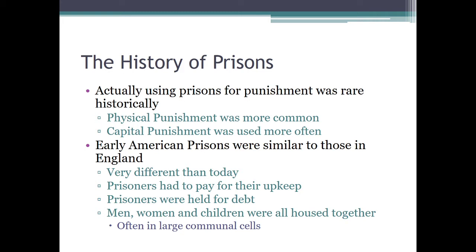Past societies tended to focus on physical punishment. Capital punishment was very common and gradually fell out of favor. As this process unfolded — really at the beginning of the Age of Enlightenment around 1700 — people began to ask whether prisons as an alternative or primary mechanism for punishment made more sense.